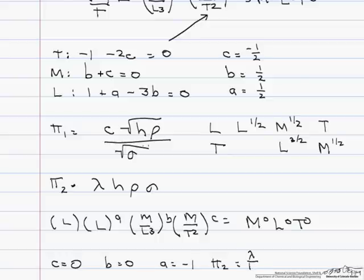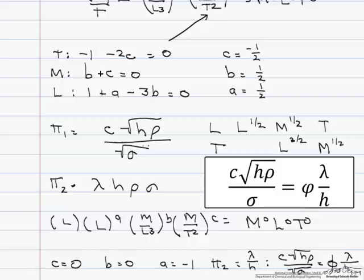And we write this as c, the square root of h times rho, divided by the square root of sigma equals some function, that's what they use in the book, of lambda over h.